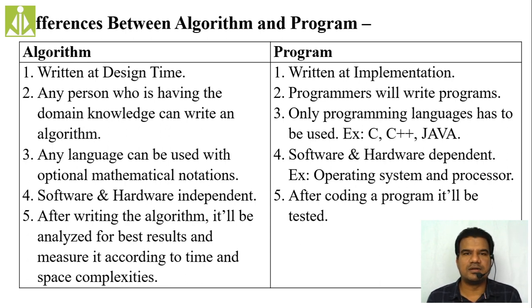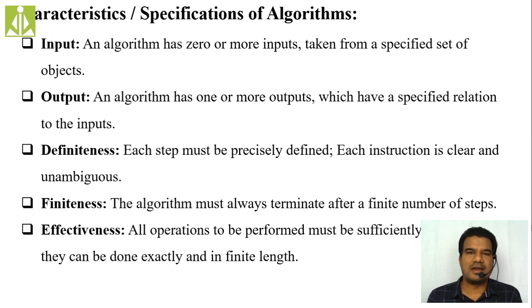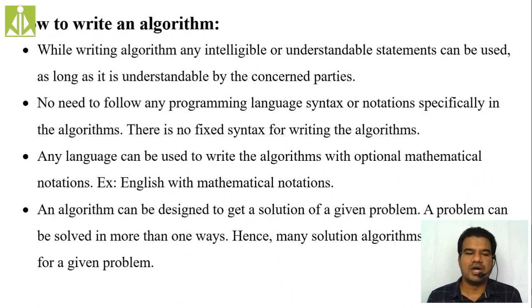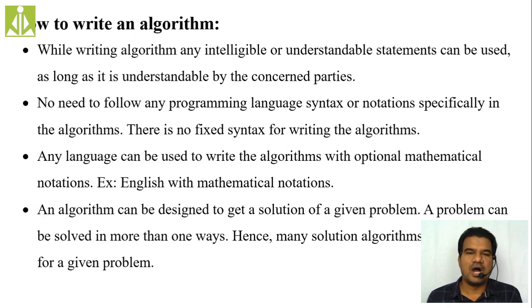We said that to write an algorithm we don't need to follow any programming language syntax or any specific language. We can write the algorithm in our natural language. Any person with basic knowledge of the domain can write the algorithm. The job of writing the algorithm is given to the domain expert, while writing the program is given to the programmer skilled in a particular programming language. We also discussed characteristics of an algorithm: input, output, definiteness, finiteness, and effectiveness.